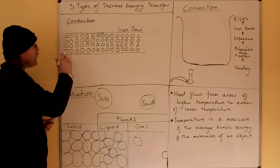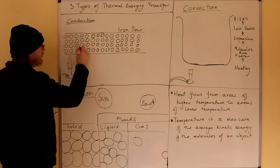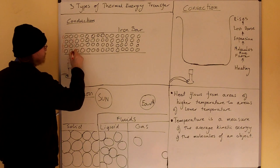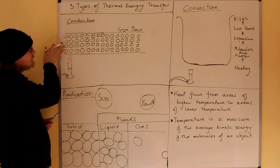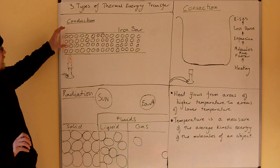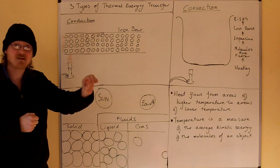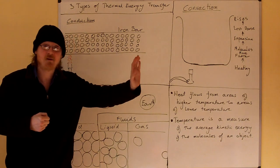They'll start to vibrate a lot more, and as they vibrate more, they'll pass these vibrations down onto the next atoms along. That's how heat passes down the iron bar—the atoms at this end vibrate more, collide with the atoms next to them, and pass the heat down the iron bar.